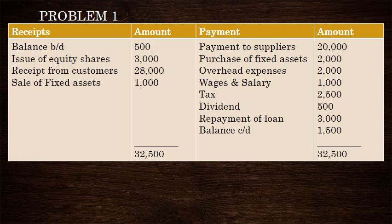You can see the direct method of cash flow from operating activity. You can see the receipt from the customer. Next, sale of fixed assets — the asset side covers all asset items. This is the cash flow from investing activity. The liability side covers all items.